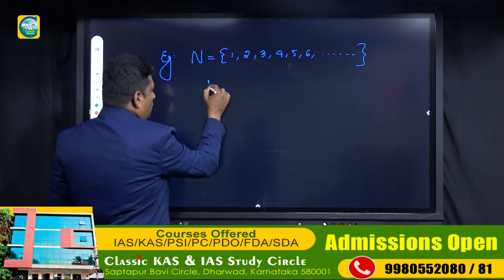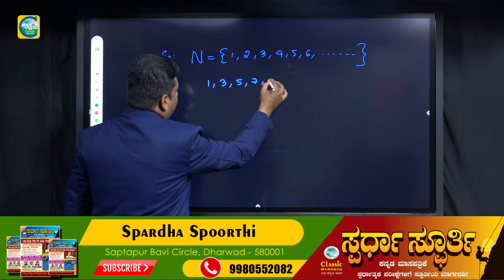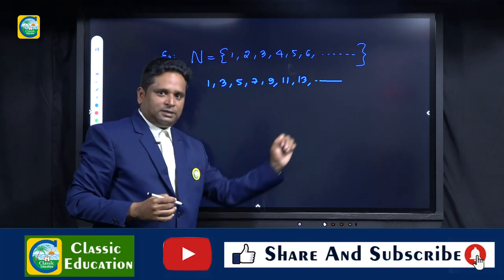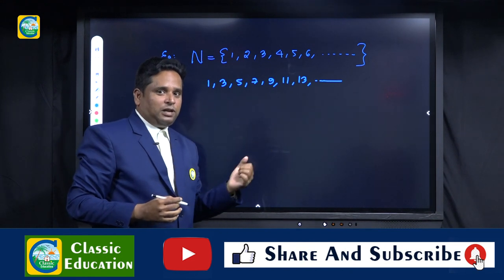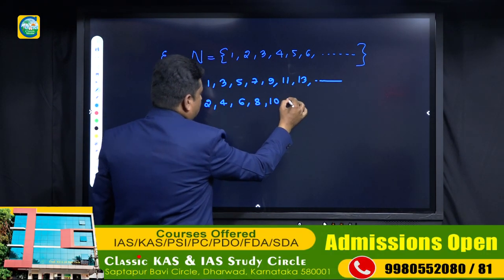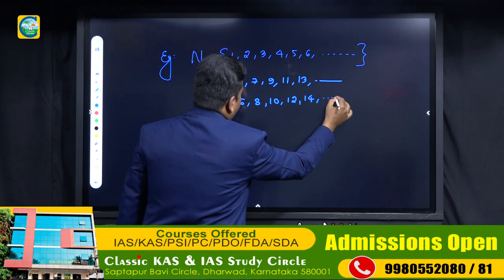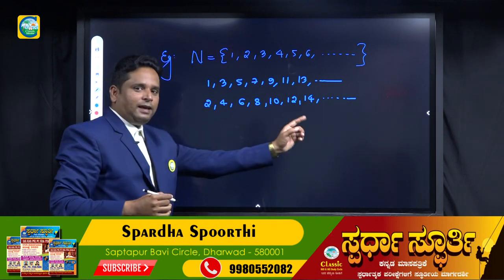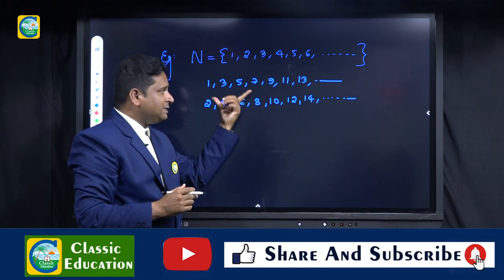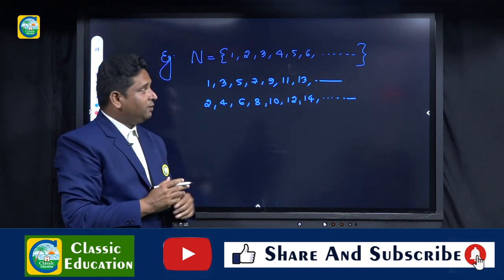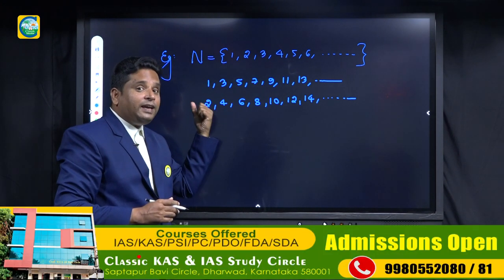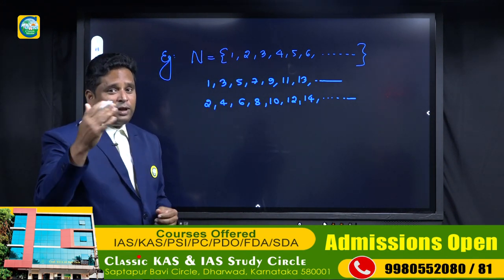Among these natural numbers, 1, 3, 5, 7, 9, 11, 13 and so on are all odd numbers — we can say odd numbers or odd natural numbers. Similarly, 2, 4, 6, 8, 10, 12, 14, 16, 18, 20 and so on are all even natural numbers. Odd natural numbers and even natural numbers together are collectively known as natural numbers.